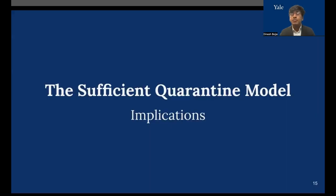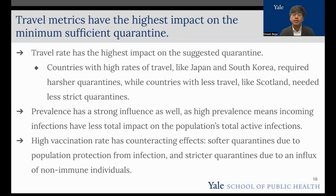We can look at some of the implications of the minimum sufficient quarantine model and how this might affect policy moving forward. First, we can note that travel metrics have the highest impact on the minimum sufficient quarantine. This makes sense, as the travel rate is going to be where the most volume of infection is coming from. For countries with high rates of travel, like Japan and South Korea, a strict quarantine is necessary, while countries with less travel, like Scotland, don't need as strong a quarantine.